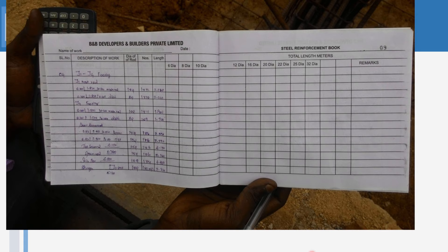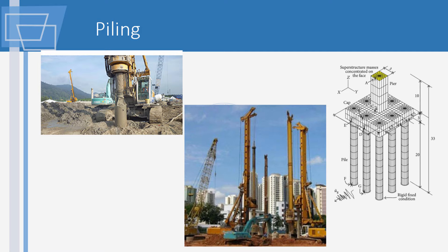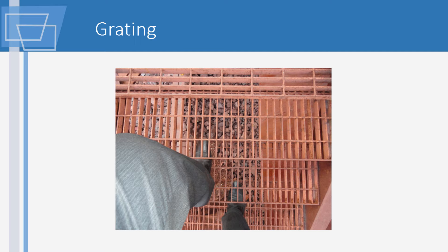Moving to piling: piling is always done in numbers. The diameter of the pile is given, and the pile is measured in running meters. The pile cap is measured in cubic meters, much like any other concrete work. For grating, you specify the type and thickness, and it is measured in square meters, but your orders are ultimately placed in kilograms or tons.